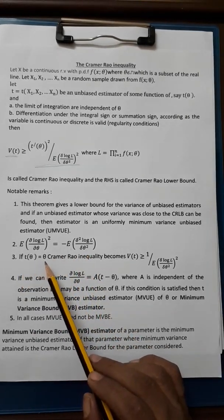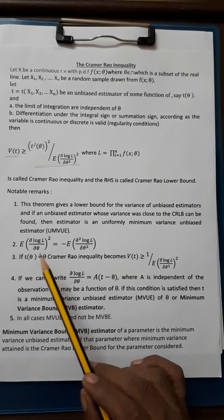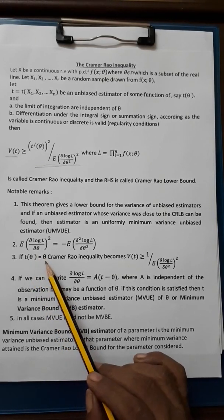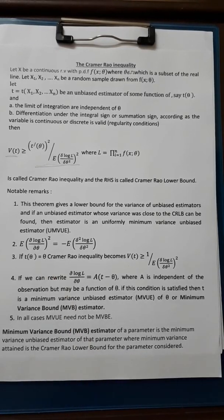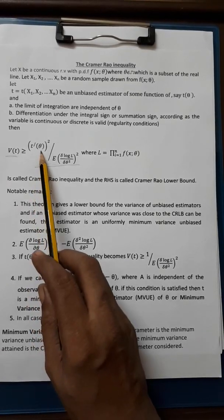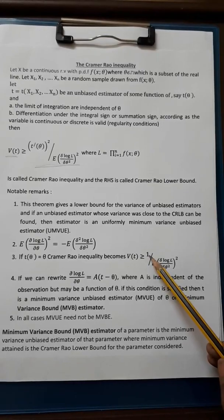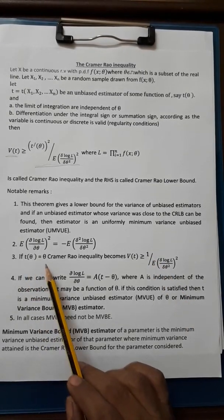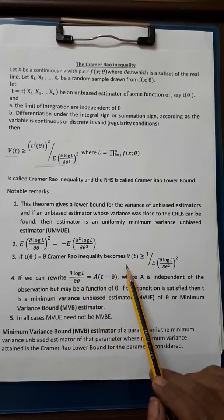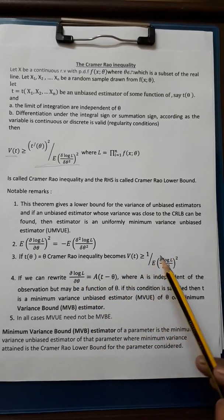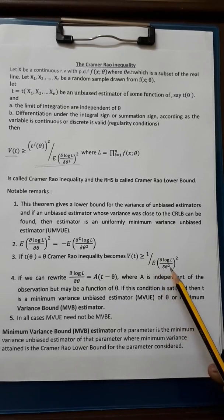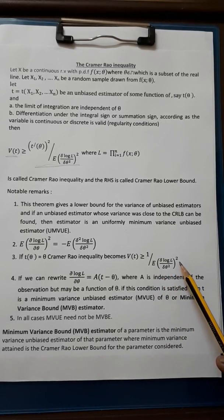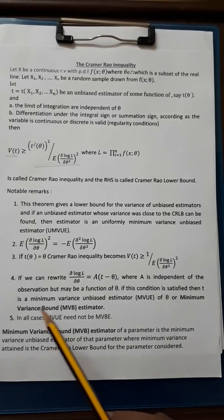If τ(θ) is equal to θ, first order derivative of τ(θ) with respect to θ is 1. So instead of τ'(θ) we can substitute 1. If τ(θ) equals θ, Cramér-Rao inequality becomes variance of t greater than or equal to 1 by expectation of [∂log L/∂θ]².